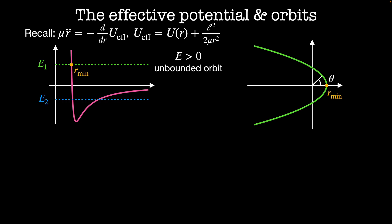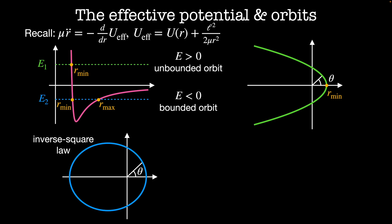and I turn around and head back away from the origin again. Now imagine I have a system with total energy E2, which is less than zero. This corresponds to a bounded orbit, because now I have two turning points in my system — one at r_min and the other at r_max — and my particle is going to oscillate back and forth in this well between them. If we have inverse square law potentials, then bounded orbits are elliptical. This is nice because there is a single position along the orbit where I am at a distance r_min and a single point where I am at distance r_max. Then the particle just traces out this conic section forever.